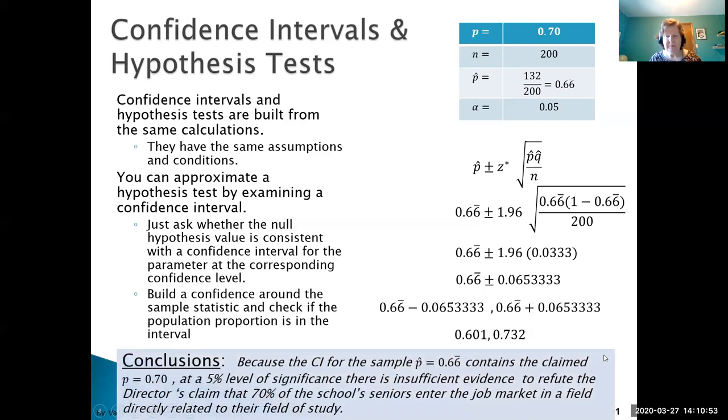0.70 falls within the interval. Because the confidence interval for the sample proportion of 66% contains the claimed level of 70%, at the 5% level of significance there is insufficient evidence.